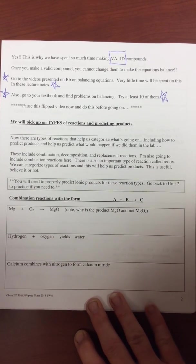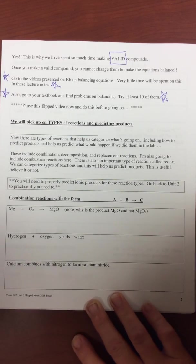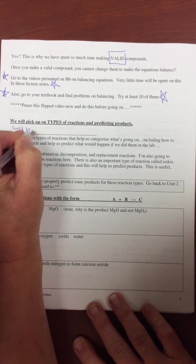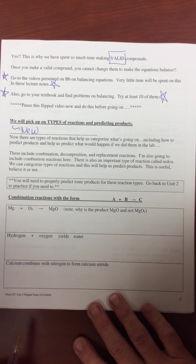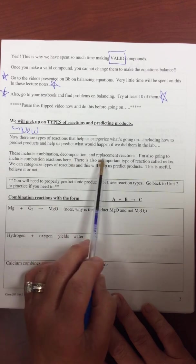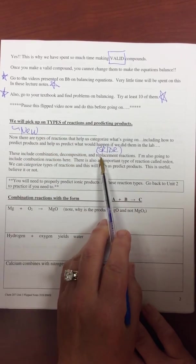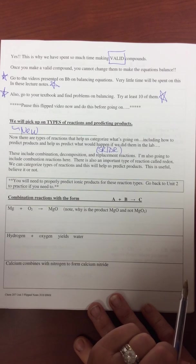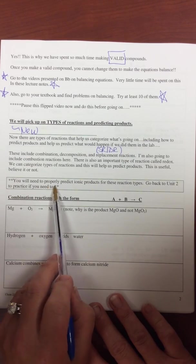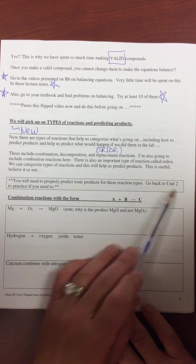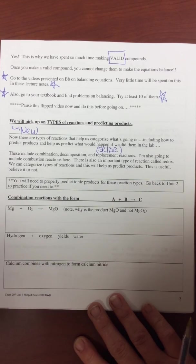Okay, so for the sake of the flipped notes, what we'll do is we'll pick up on types of reactions and predicting products. Some of this is new for some of you. Some of it is not. So there are different types that we'll talk about. Combination, decomposition, single replacement, and double replacement, which we just call replacement or displacement. Now again, you'll need to properly predict ionic products before going forward. Go back to Unit 2 to practice if you need to.